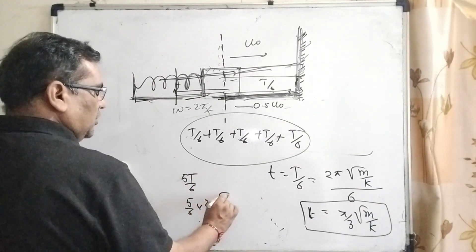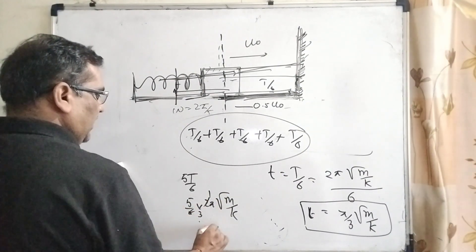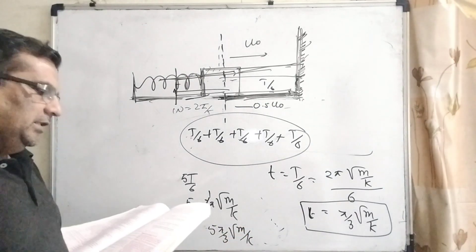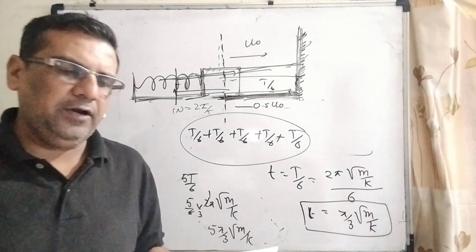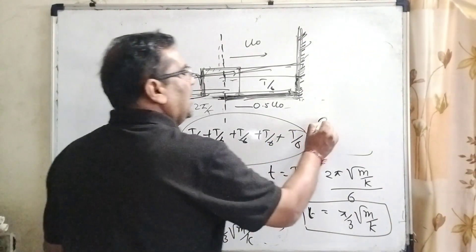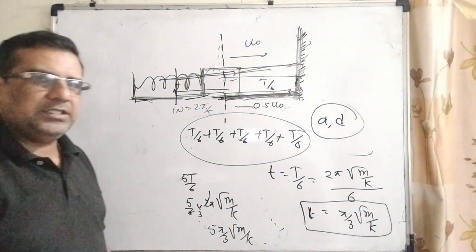How many times? Then 5t by 6. Then 5 by 6 times 2 pi root m by k gives 5 pi by 3 root m by k. Yes, this option is correct. So therefore, in this multiple choice question, first and last options are correct. I hope you understand this question. Thank you.